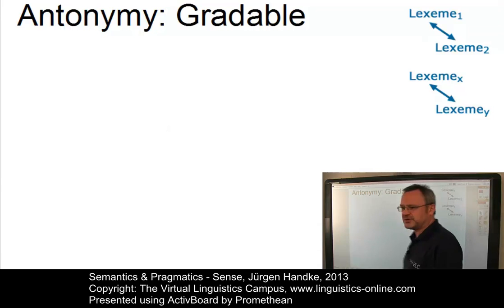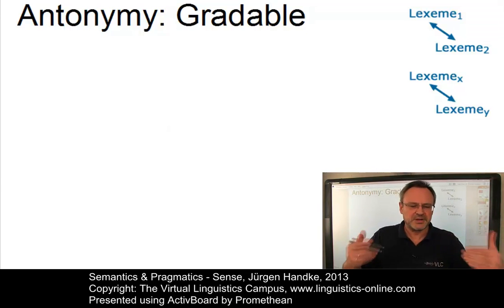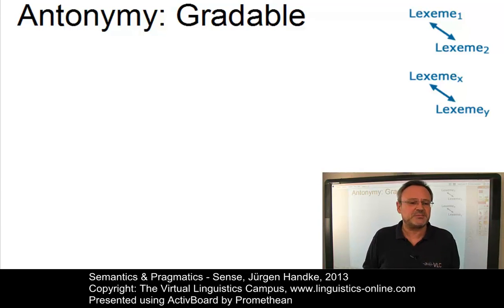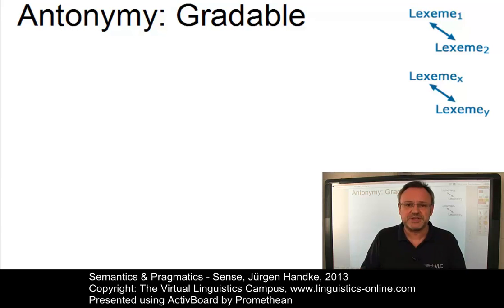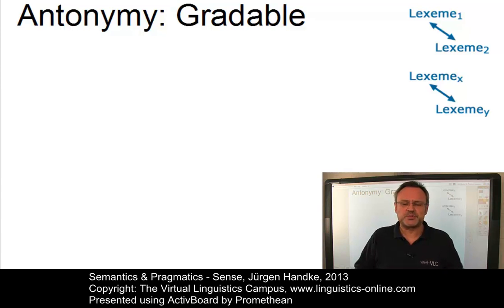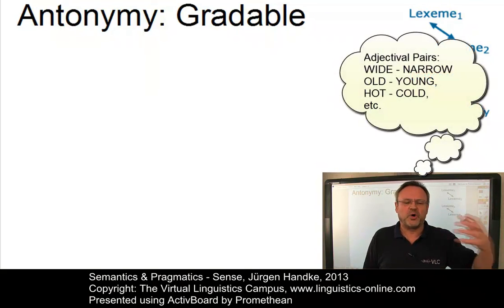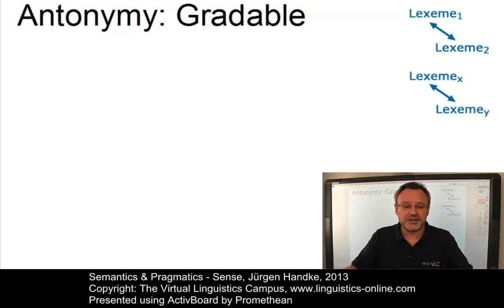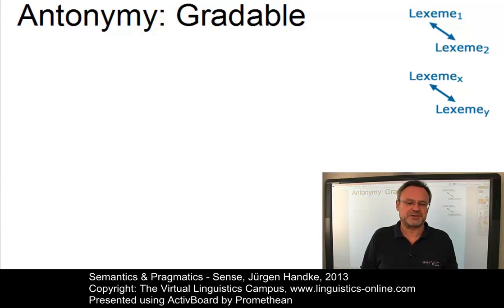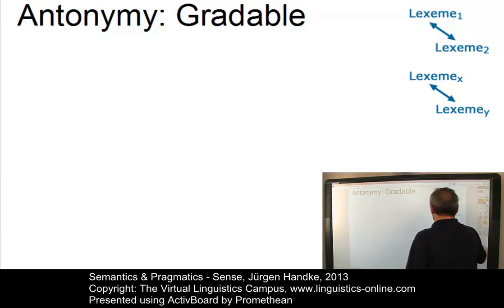One possibility is referred to as gradable antonymy. This is a relationship between opposites where the positive of one term does not necessarily imply the negative of the other — in other words, the opposition is a matter of degree rather than absolute. This type of opposition is usually associated with adjectives such as wide, old, tall, hot, etc. The items in a set of gradable antonyms are all mutually exclusive, all gradable, and they represent different points along a scale according to which they can differ.